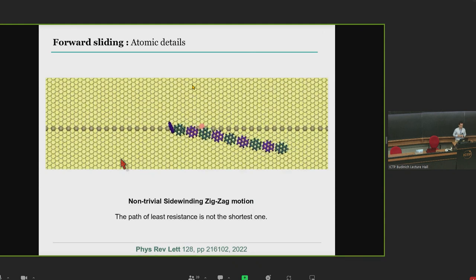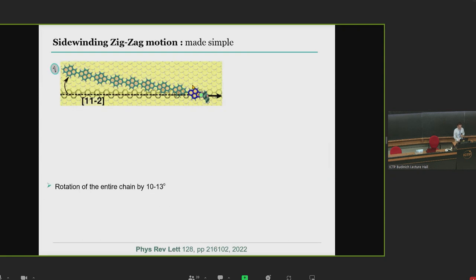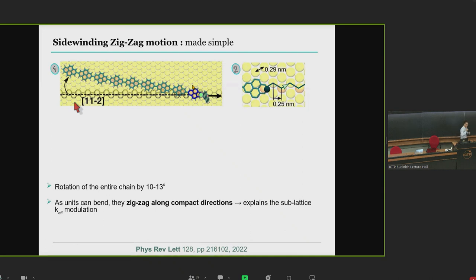The reason behind this sub-lattice stick-slip motion is: as we manipulate the molecule, we have this non-trivial sidewinding zigzag motion, which is essentially composed by three elements. It's important to note this is observed regardless of the chain length, for example for chains as small as three units. The first thing is tail rotation. The second is that at each individual unit, instead of going from one lattice position to the next, it jumps into an intermediate position. This allows the unit to always go along compact directions. As you can see, it goes from here to here, and therefore you break a motion of 0.5 nanometers into 2 of 0.25.